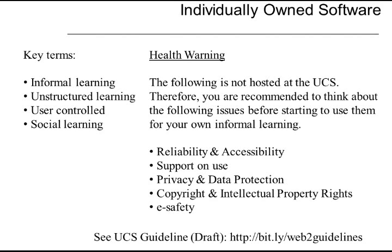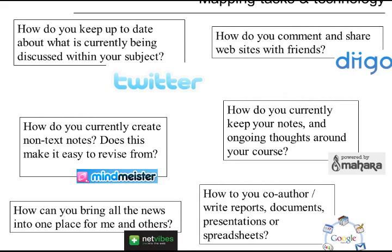These tools offer things that we can't provide institutionally. As a mapping to some tools you might want to use: look at Twitter for keeping up to date about what's happening or being discussed within your subject area — this is about your personal learning networks. Diigo is a social bookmarking tool — the idea of how you find, store, manage, comment, and share web resources with friends, colleagues, or your cohort. And Mahara — or we can change it to WordPress — for keeping notes, ongoing thoughts, decisions, and tracking those.